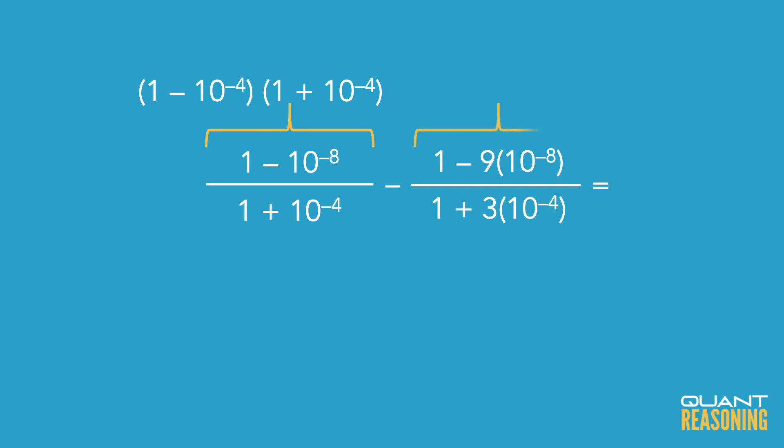Applying that same trick to the numerator of the second term, there you'd have 1 minus 3 times 10 to the power of negative 4 times 1 plus 3 times 10 to the negative 4.